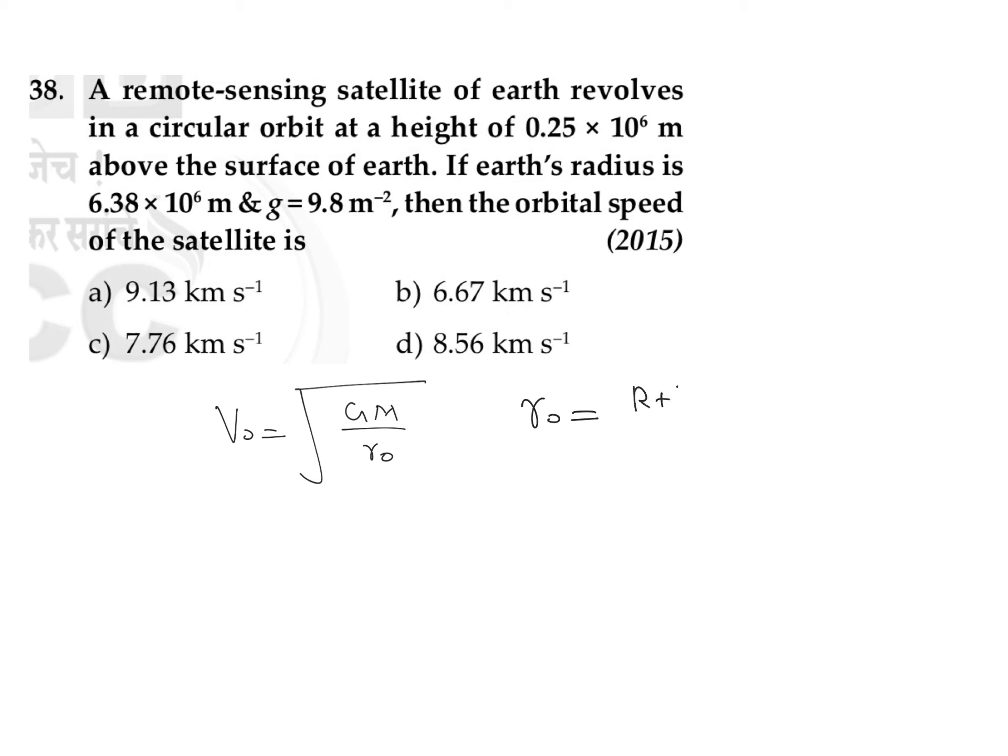So we can write it as r plus height h. So r is 6.38 × 10⁶ plus h is 0.25 × 10⁶. So we can write this as equal to 6.63 × 10⁶.